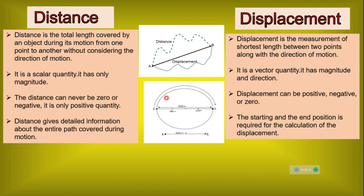While the distance covered by the object in going from A to B will be half of the circumference — it will be pi R, where R is the radius of the circle. When the object returns to its original position, the displacement will be zero because the starting and end position will be the same. But the distance covered by an object in going from A to B and then from B to A will be the circumference of the circle — it will be 2 pi R.